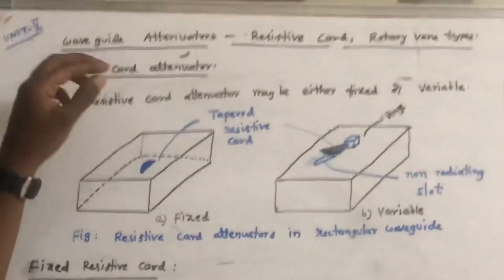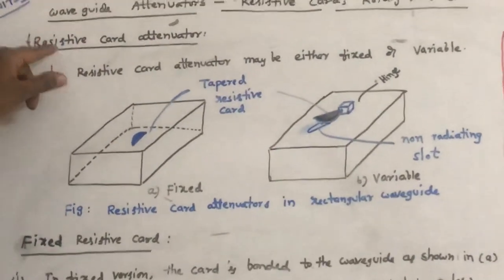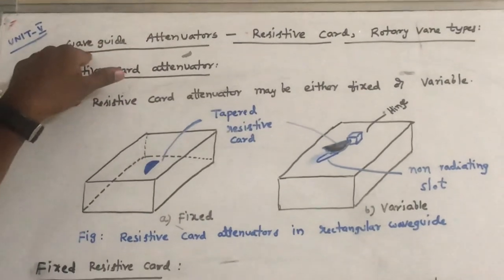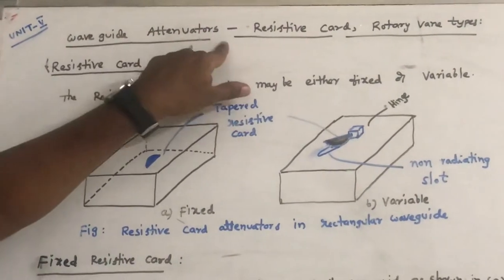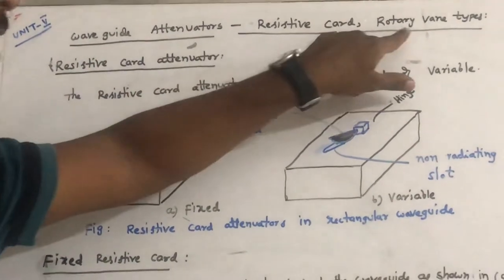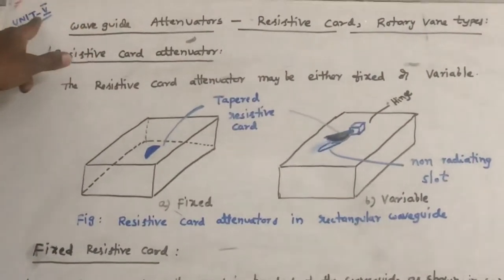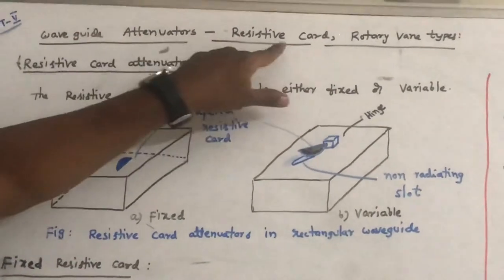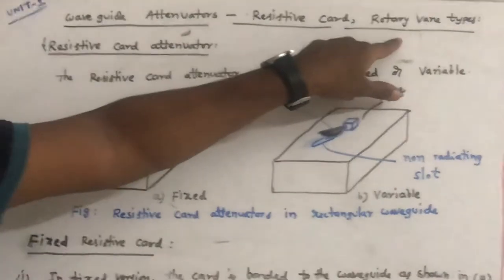Welcome to the series of video lectures on microwave engineering. In this lecture, we will discuss waveguide attenuators. There are two topics: resistive cord attenuator and rotary vane attenuator. This comes under Unit 5 of the microwave engineering subject. Let us see what is resistive cord and rotary vane type attenuator.